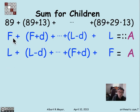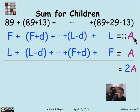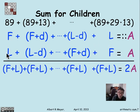Notice what happens when I add up these two sums. I get 2a, of course, but every one of these terms, this is an f plus l. This is an f plus d plus l minus d. It's f plus l. This last one is an f plus l.